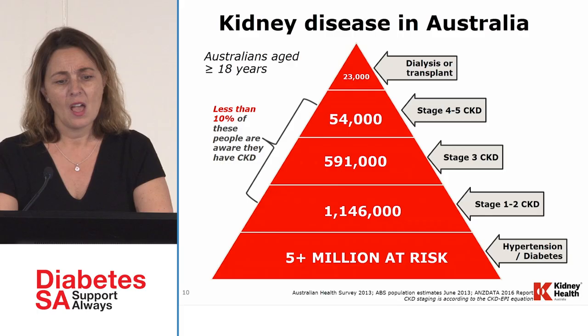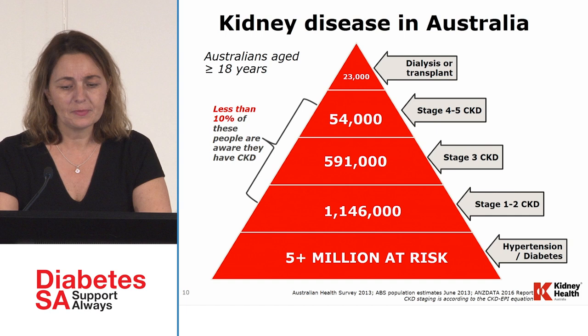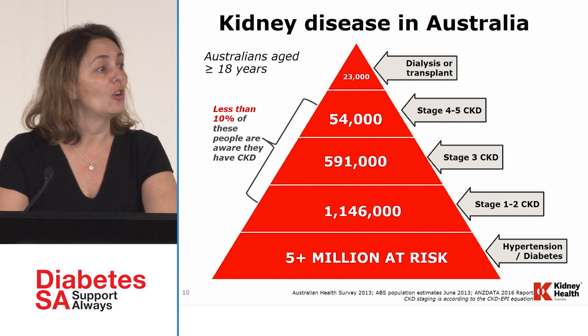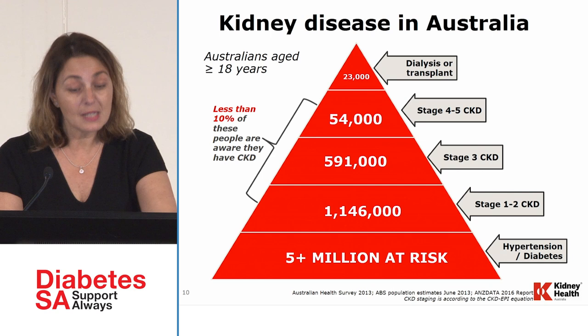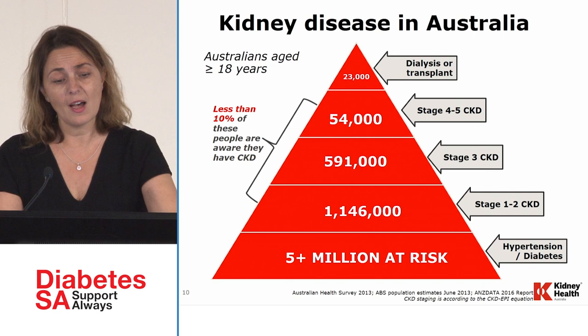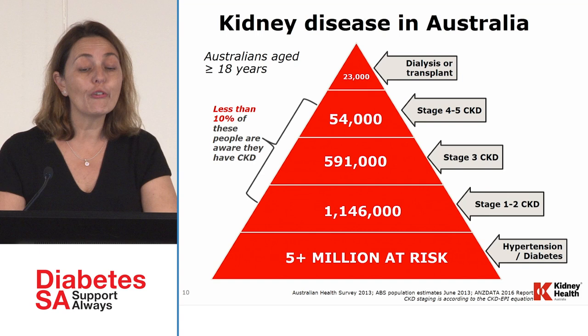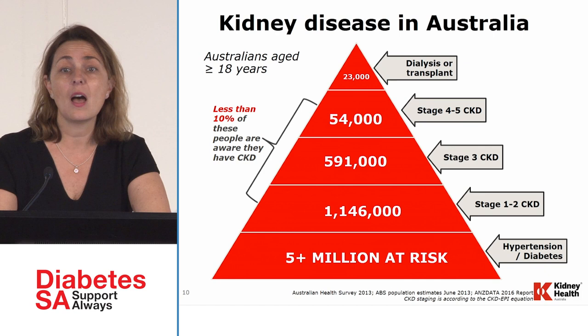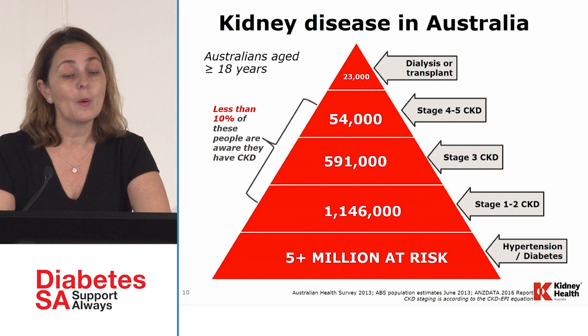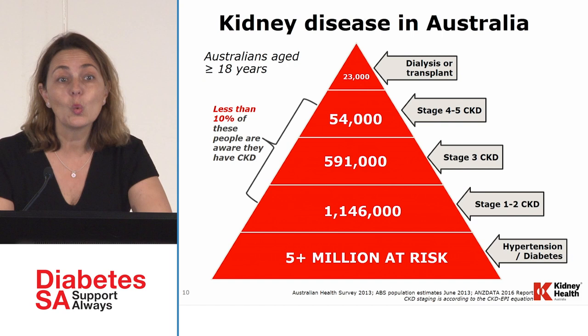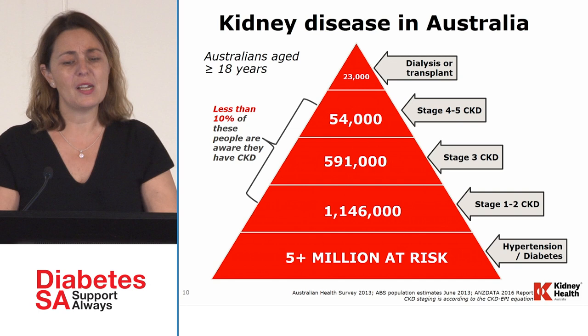In Australia, data from ANZDATA — the registry collecting information on patients with CKD in Australia and New Zealand — shows many patients with hypertension and diabetes at CKD stage one, two, or three who may not know they have kidney disease. When they become symptomatic, it's usually at stage four or five. The number of patients actually starting dialysis is relatively small compared to the large population with CKD.